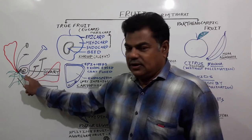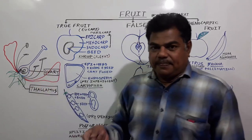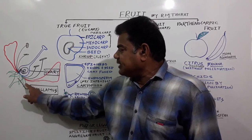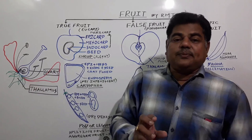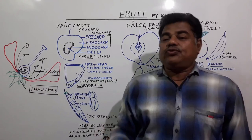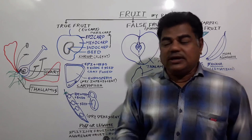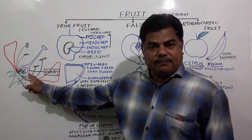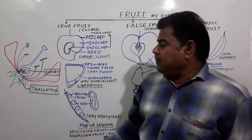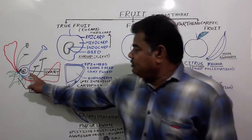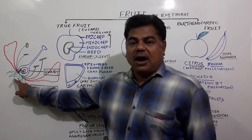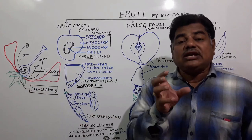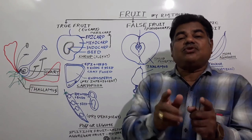In fruit formation, after fertilization fruit formation takes place through the ovary wall. But along with the ovary wall, other floral parts — for example the thalamus, or in some cases the calyx — also take part in the process of fruit formation. Such a fruit we call a false fruit. In true fruits, fruit formation takes place only from the ripened ovary after fertilization, but in false fruits the thalamus or calyx also takes part.